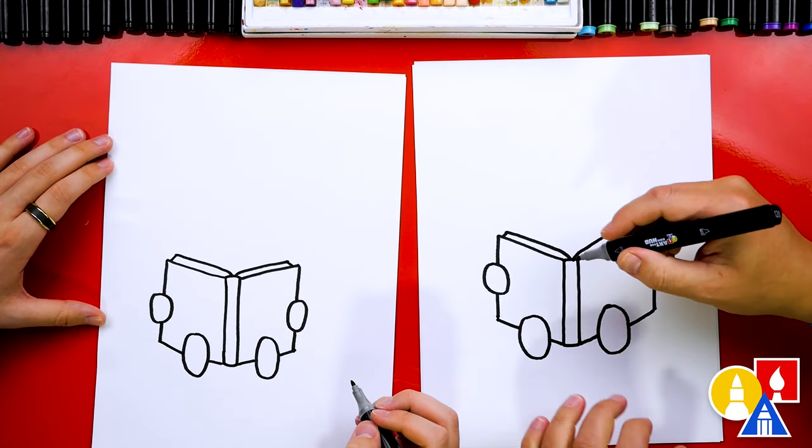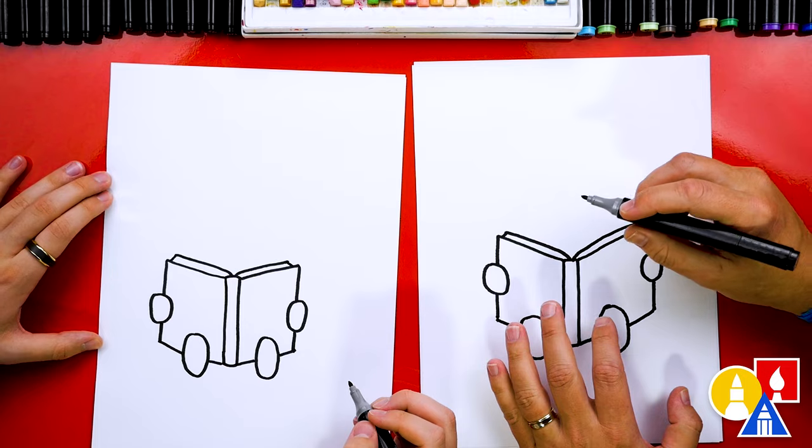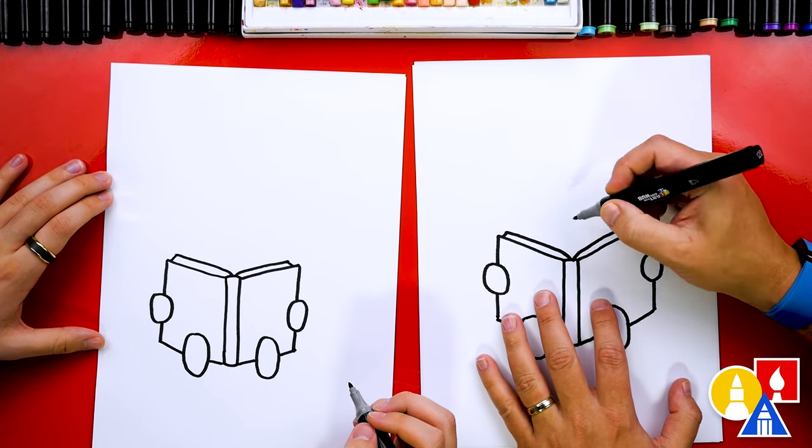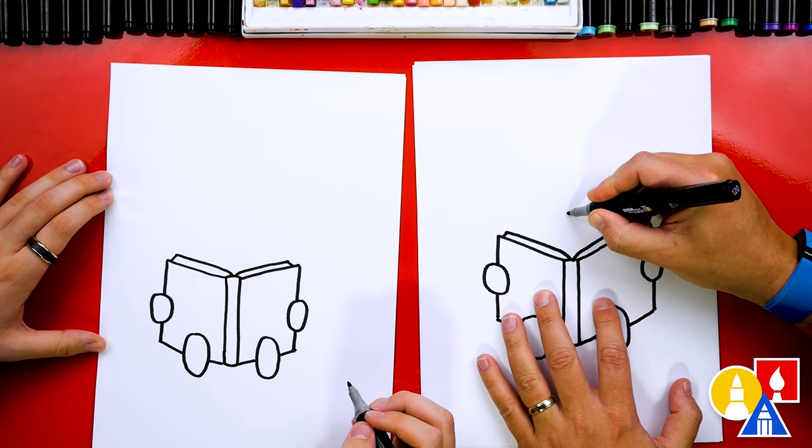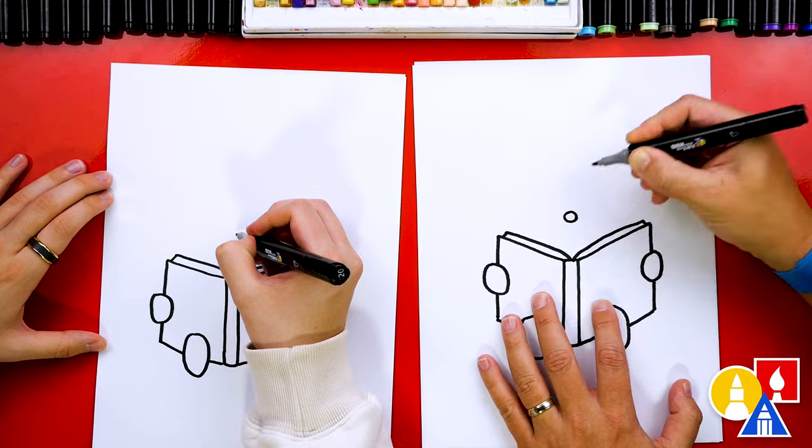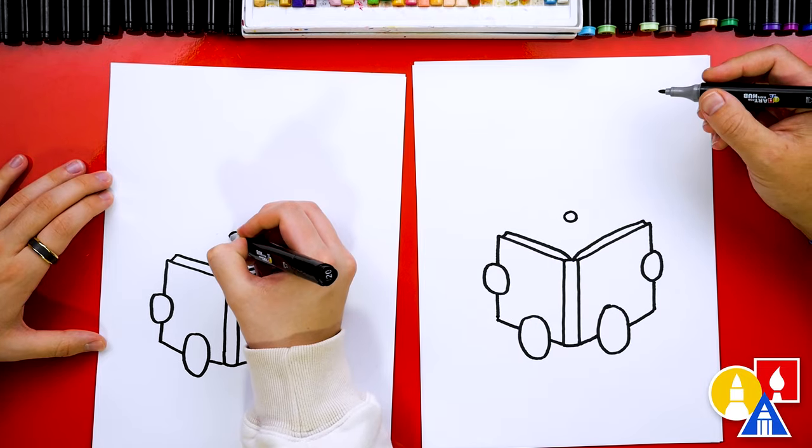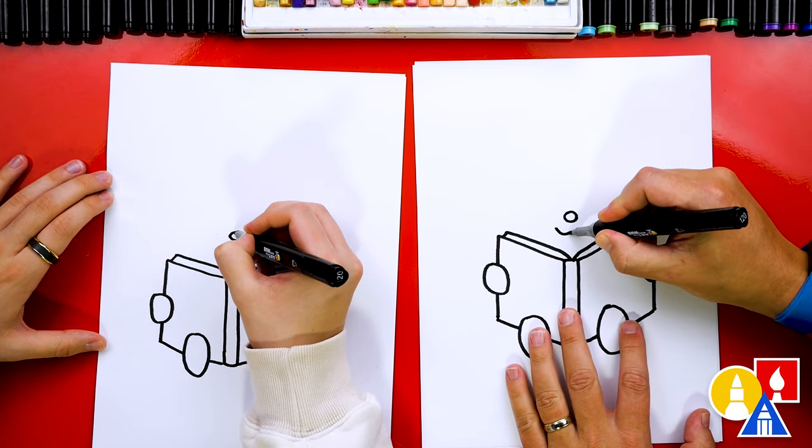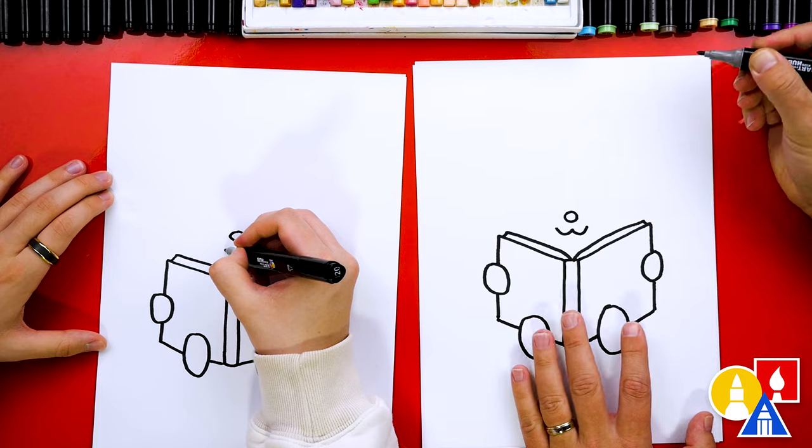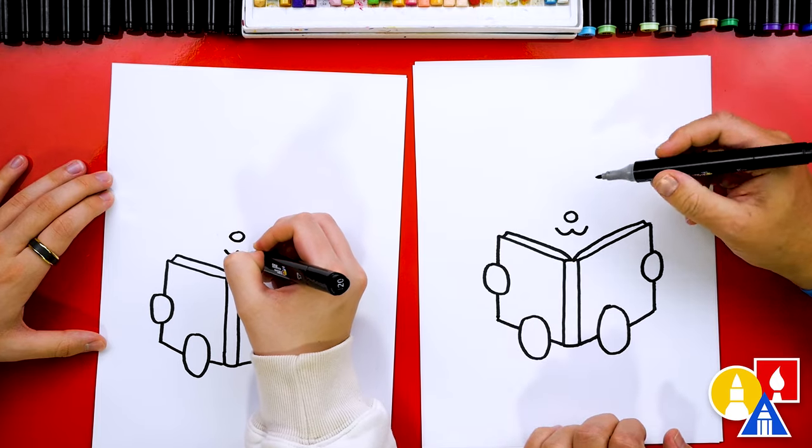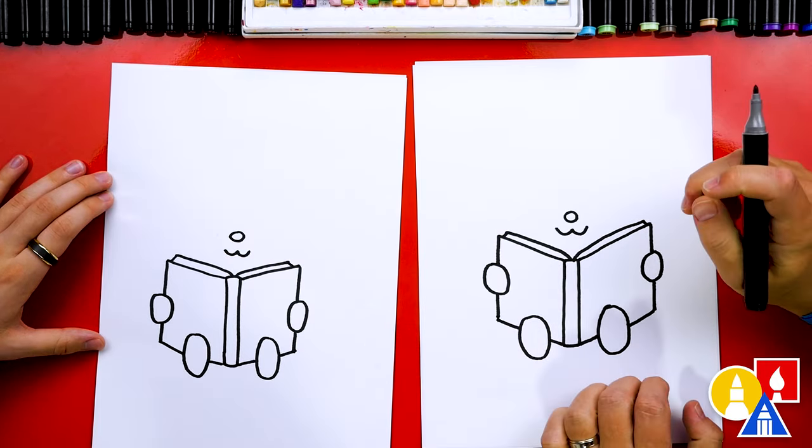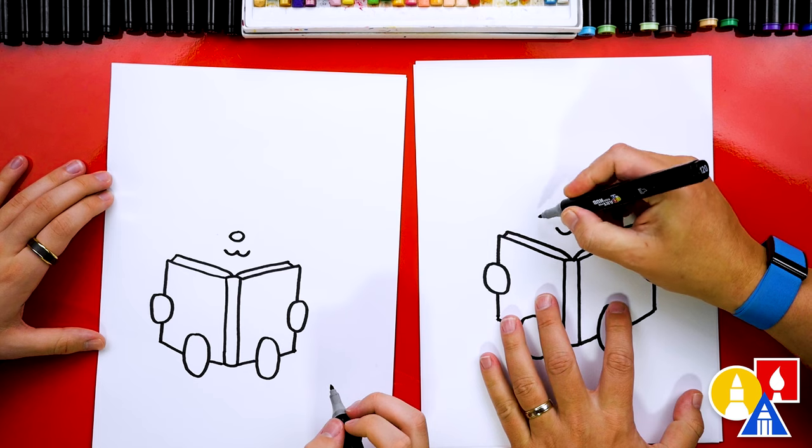Now we're ready to draw our person or animal or whatever character. Creature. So let's draw the nose first. Maybe this is an animal. I don't know. And then we can draw the mouth. And this is really where you could change anything. You could add different details. Maybe your character has a beard or fangs.